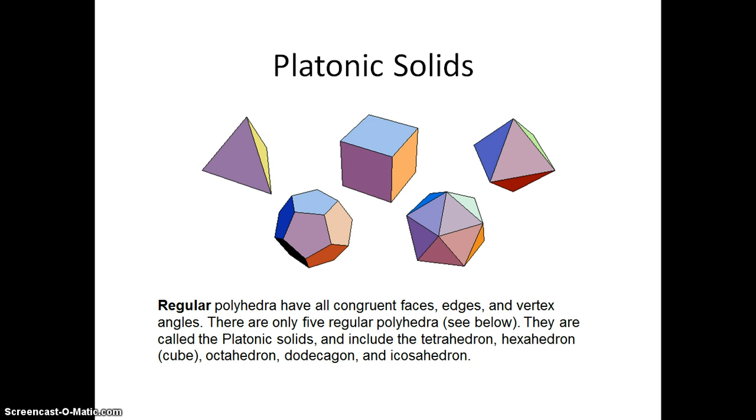We're going to extend that to three-dimensional shapes and say regular polyhedra have all congruent faces. That means all the faces are exactly the same size and shape, all congruent edges, they all measure the same length, and all congruent vertex angles. So for three dimensions, there are three things that all have to be congruent.